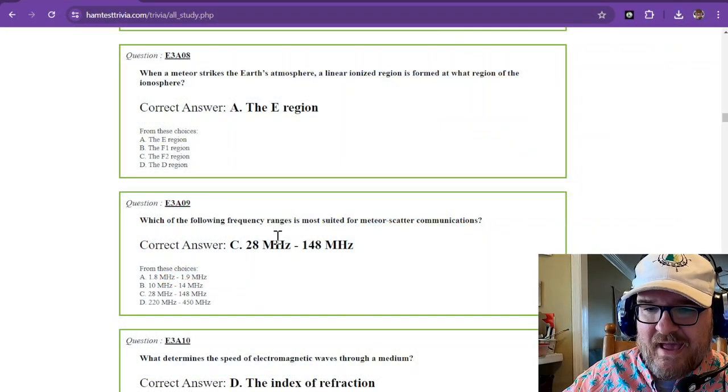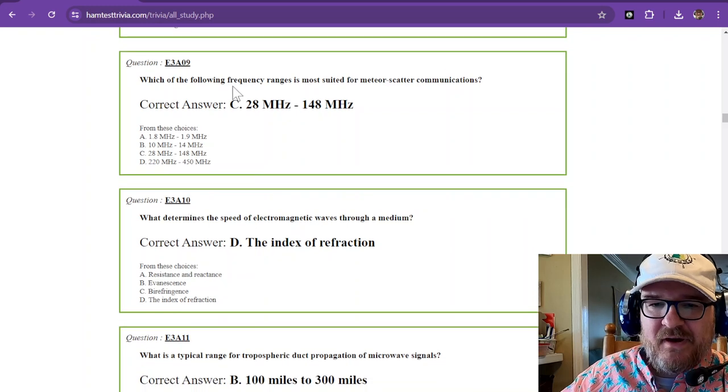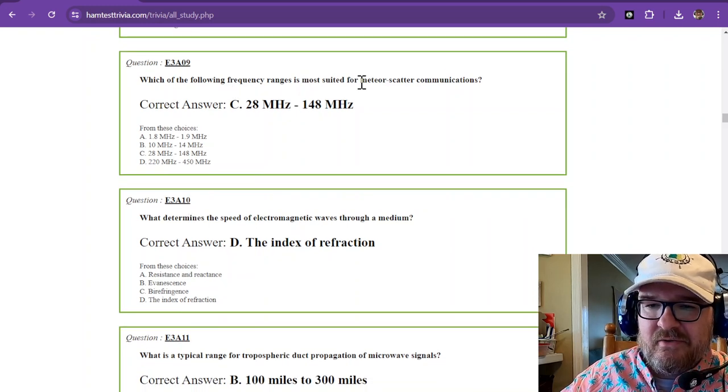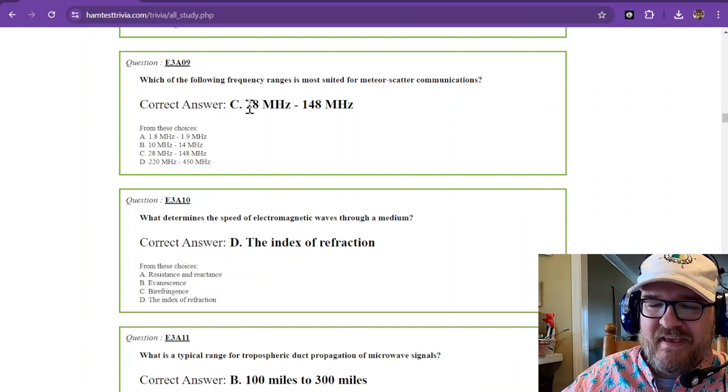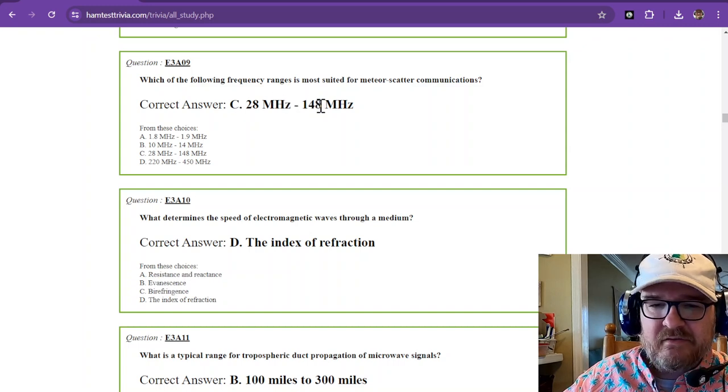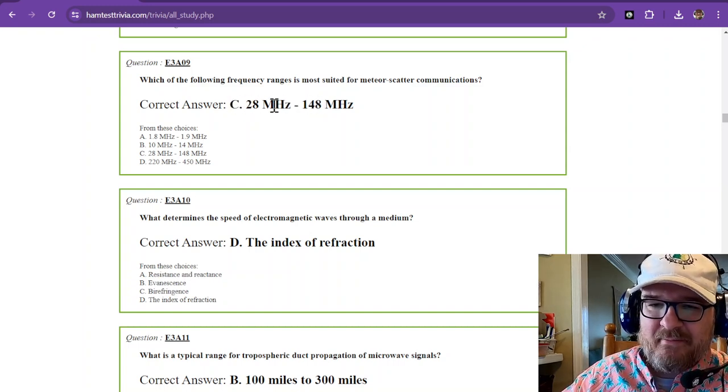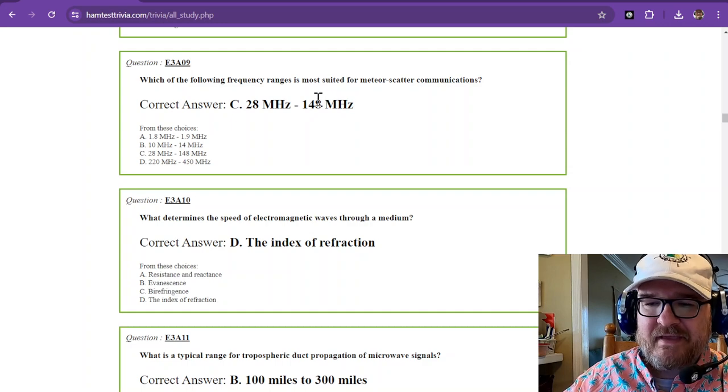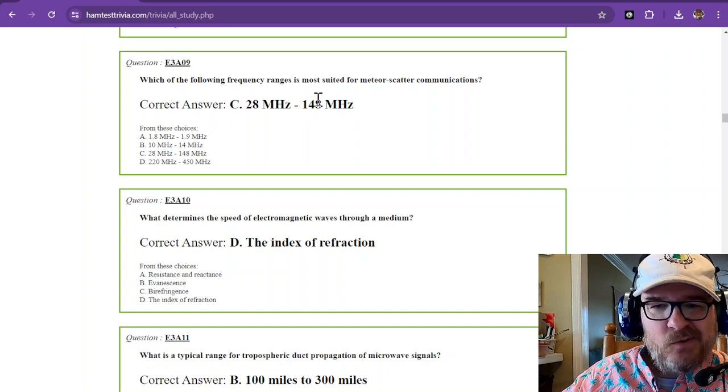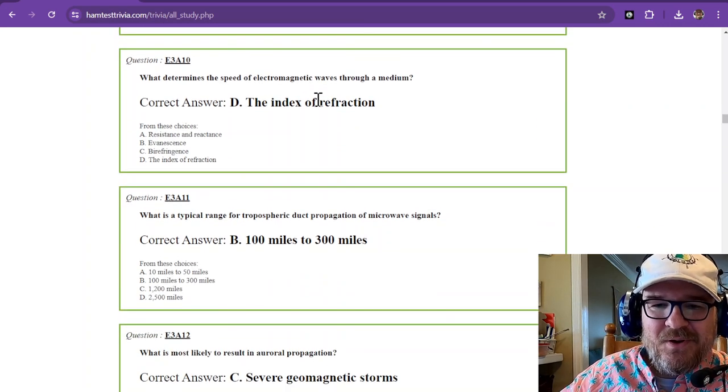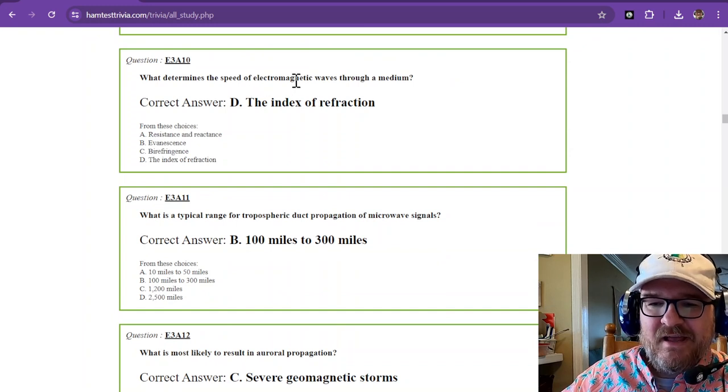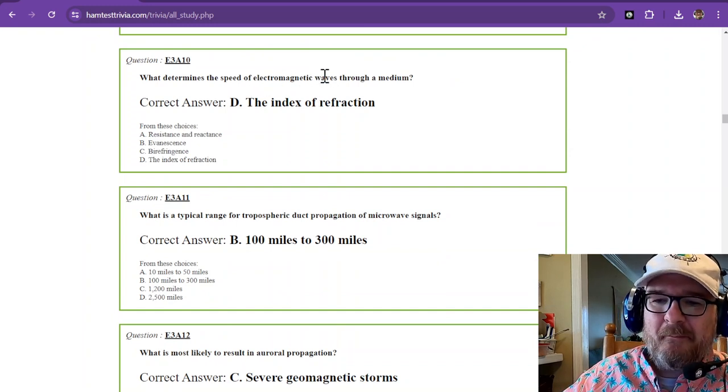Let's transition back, see what else we've got. Which of the following frequency ranges is most suited for meteor scatter communications? And that's going to be 10 meters through 2 meters. So that would be 10 meters, 6 meters, 2 meters. That's your answer, 28 megahertz to 148 megahertz. And that's what you're going to bounce off of those meteor scatter clouds, I suppose.